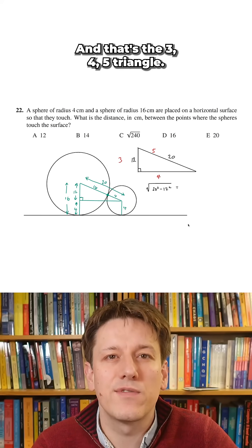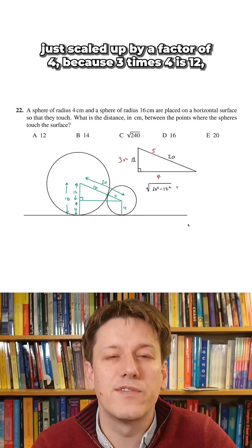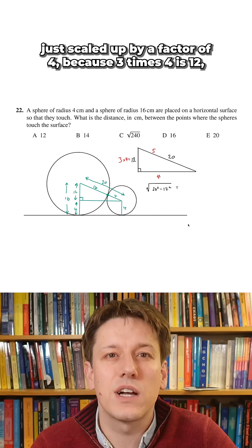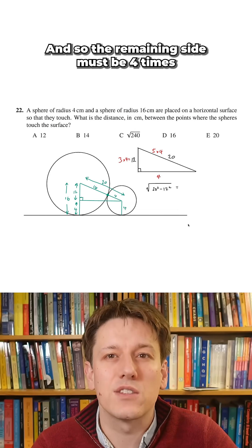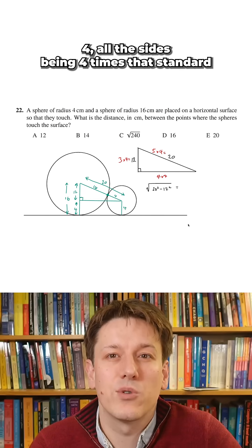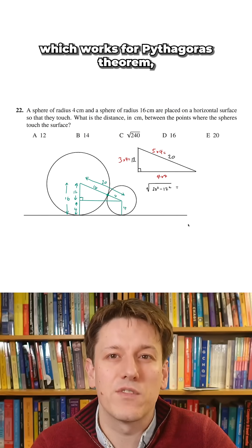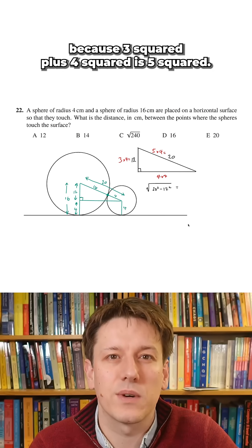The 3-4-5 triangle is what is here, just scaled up by a factor of 4, because 3 times 4 is 12, 5 times 4 is 20, and so the remaining side must be 4 times 4. All the sides being 4 times that standard 3-4-5 triangle, which works with Pythagoras theorem because 3 squared plus 4 squared is 5 squared.